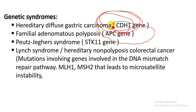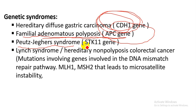The next genetic syndrome is familial adenomatous polyposis, caused by APC gene mutation. Then there is Peutz-Jeghers syndrome, due to mutation in the STK11 gene. The next is Lynch syndrome, or hereditary non-polyposis colorectal cancer, caused by mutation in genes responsible for DNA mismatch repair, leading to microsatellite instability.